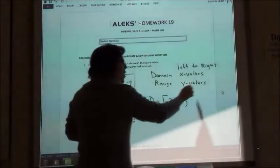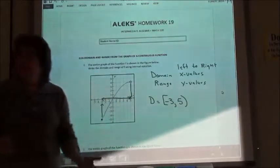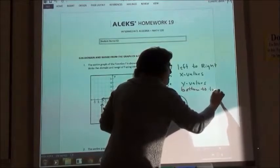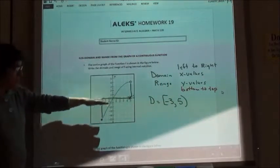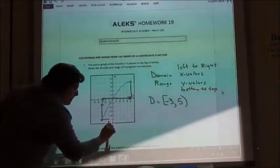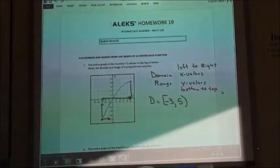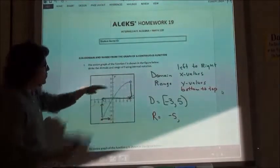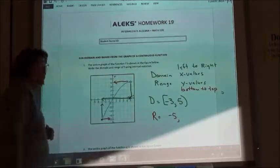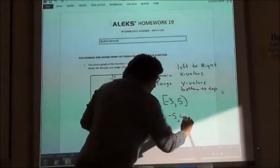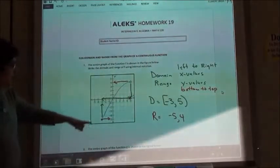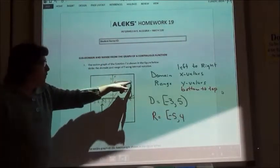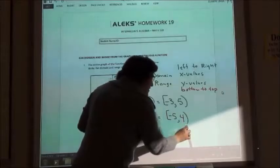For my range, the range is the y values. We're going to look at our graph from bottom to top. So the bottom point on my graph for a y value is going to be down there at negative 5. The top point on my graph, the highest one goes up to a y value of 4. Again, I have to have my end marks. The negative 5 has a filled in circle, so we're going to have a bracket. The 4 has an open circle, so that end has the parenthesis.